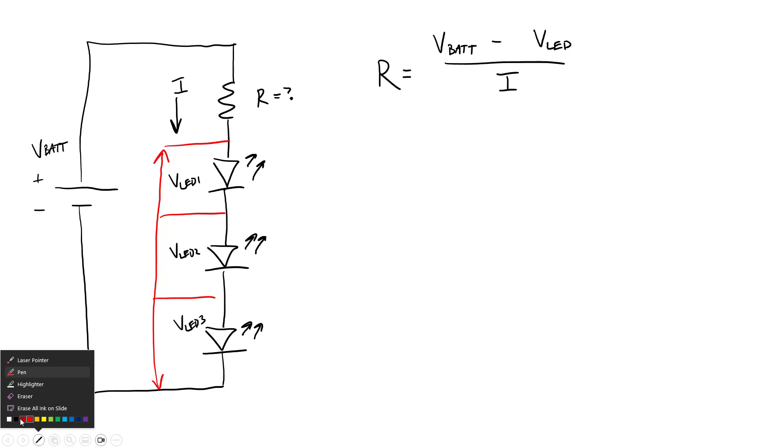So we are just going to throw a summation symbol into this equation. So the value for this single current limiting resistor is going to be the battery voltage minus the sum of all of the LED voltages divided by the LED current. Since all of these LEDs are in series, the current through each one of them is going to be the same. So we only have one current there. Whereas depending on the LED color, we might have different voltage drops across the LEDs.